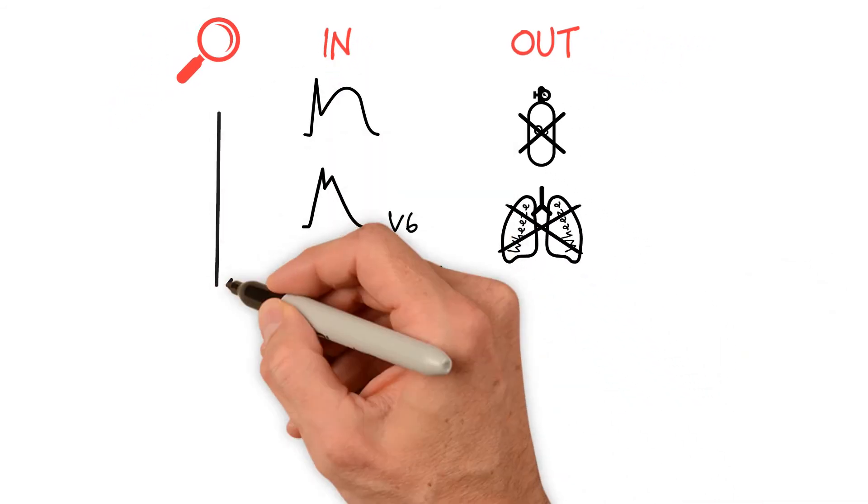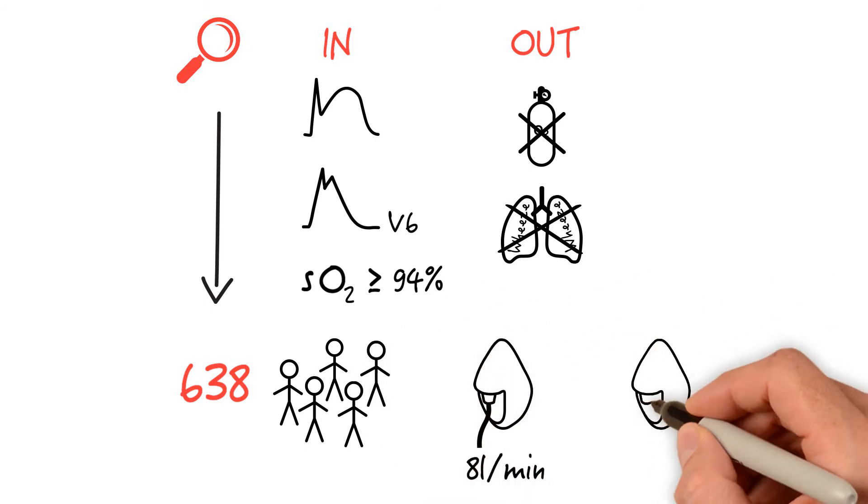They recruited a total of 638 patients to receive 8 liters per minute of oxygen by face mask or no supplemental oxygen, or in other words, room air.